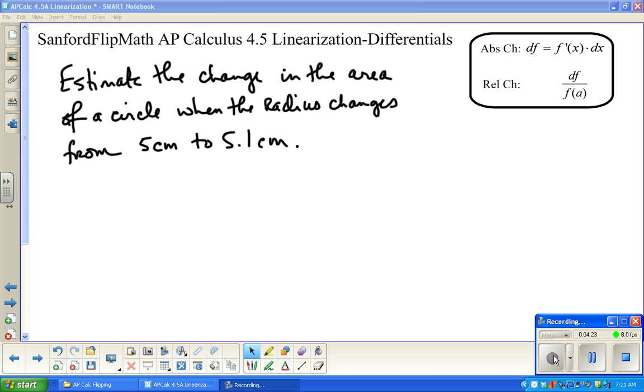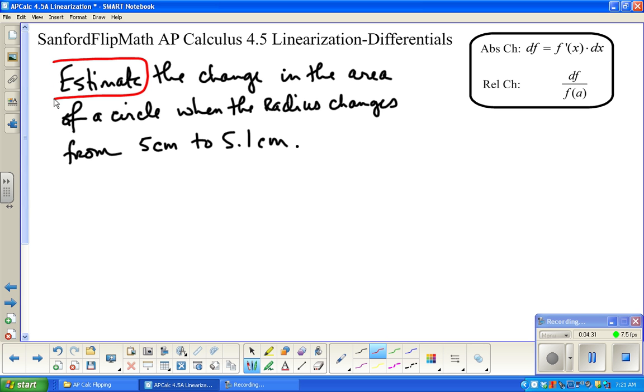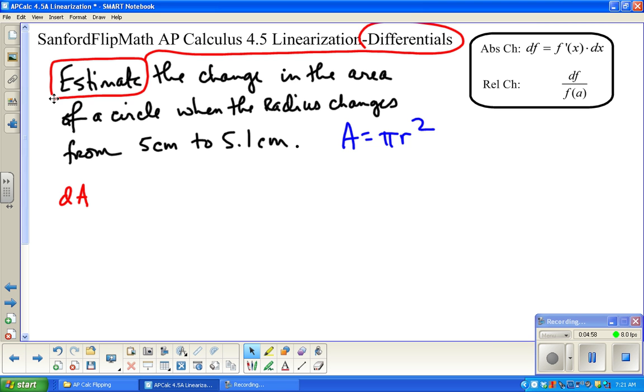For instance, this guy would be one-tenth times 100%, so 10%. And I'm not going to spend a lot of time worrying about converting from a decimal to a percent. Hello, this is calculus. So let's put this to work, because this is meaningless until we actually do something with it. So what we're going to do is estimate the change in area of a circle when the radius changes from 5 centimeters to 5.1 centimeters.